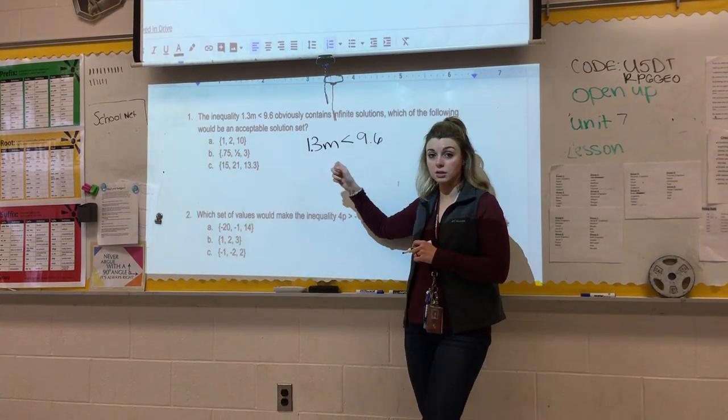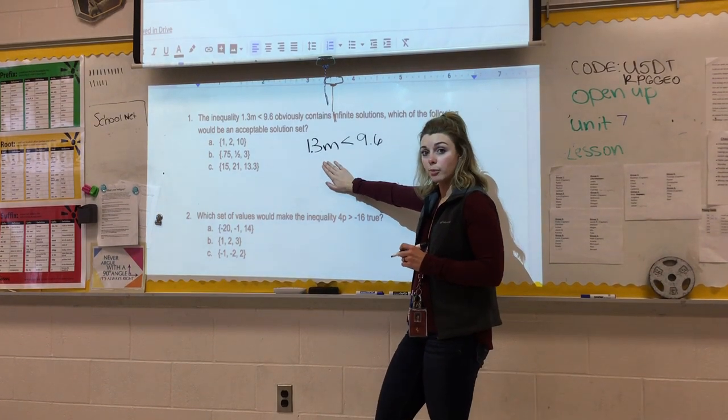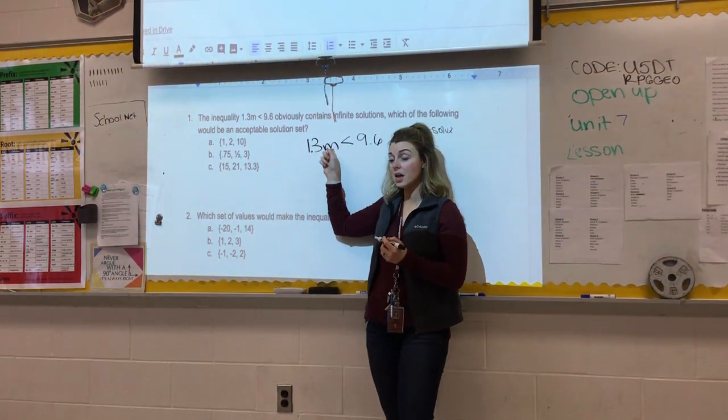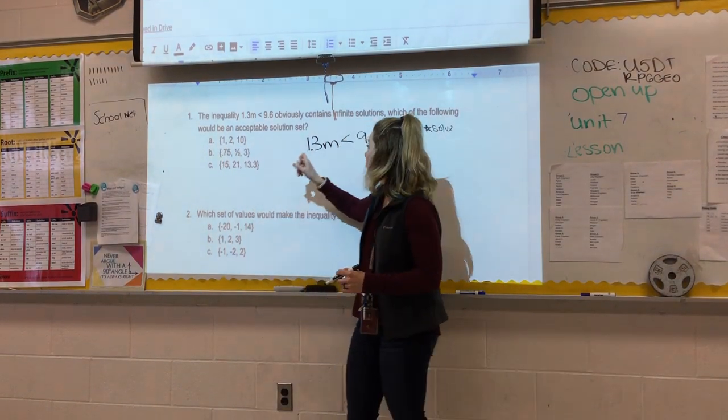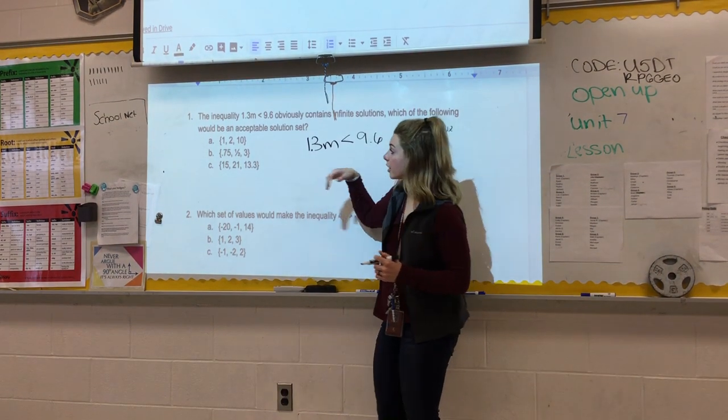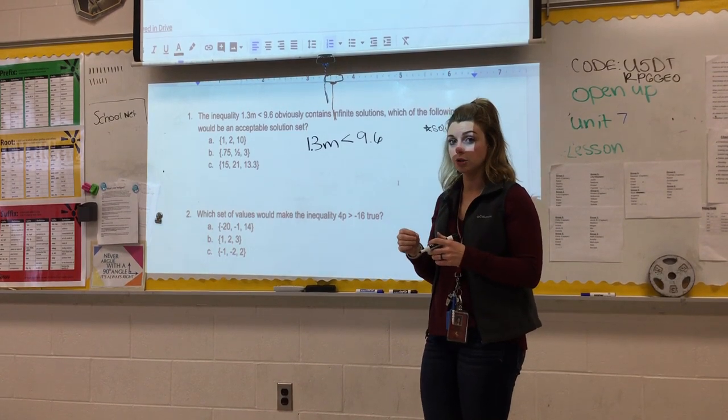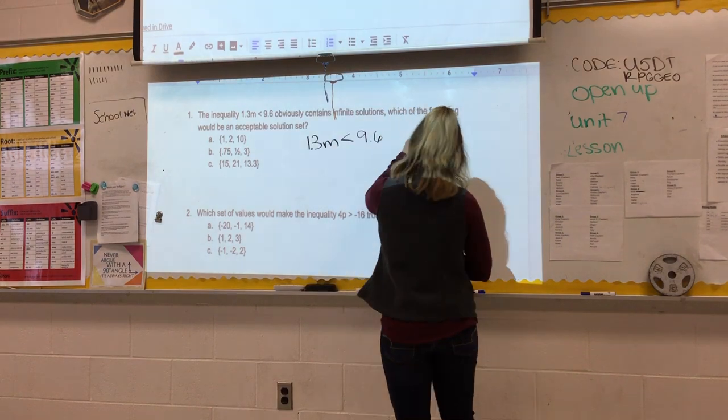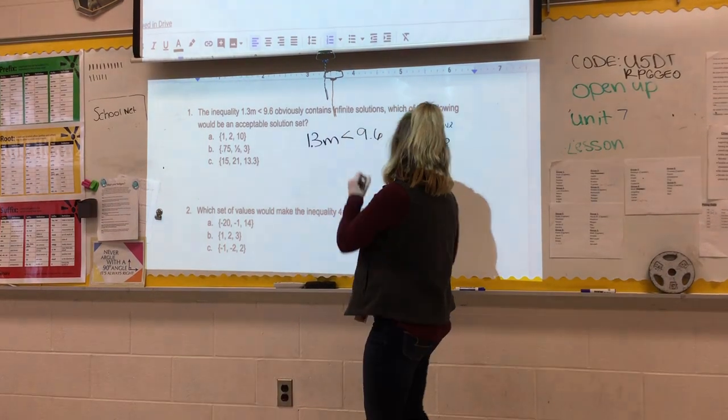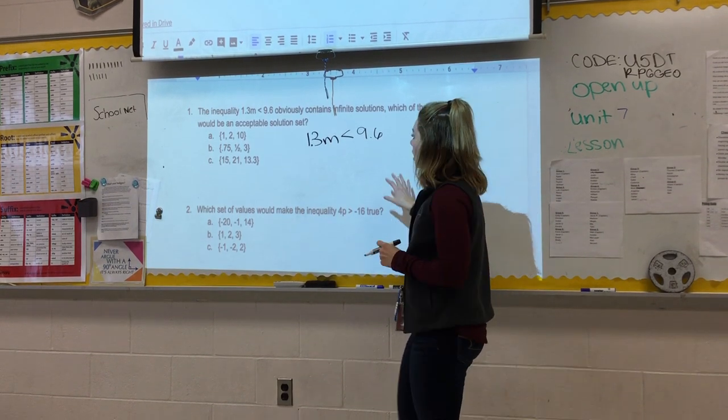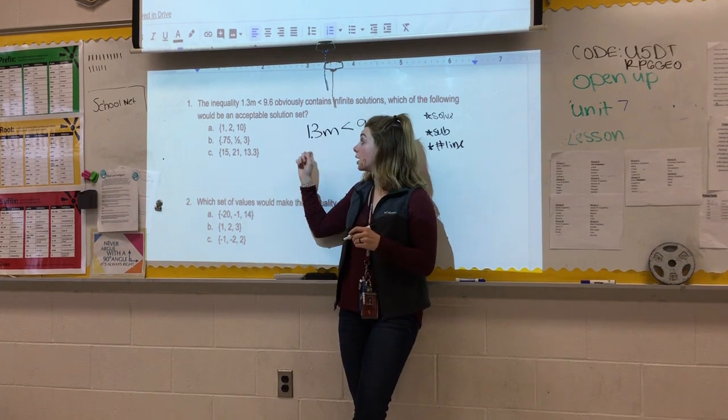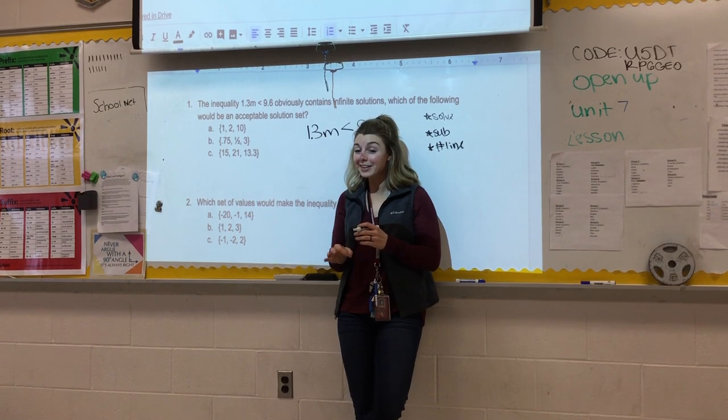So let's go ahead and talk about this piece by piece. The 1 and 3 tenths m, that is our coefficient. Our coefficient is the number that's right next to the variable. It means to multiply. So this is telling us that 1.3 times something or m has to be less than 9.6. And remember what makes an inequality different than an equation is that it does have infinite possibilities. That's why for inequalities we have solution sets, whereas equations just have one answer. So for this one, the strategies that we could use to solve: we could either solve this inequality through the inverse operation, or we could use substitution, or we could try to plot it on a number line.